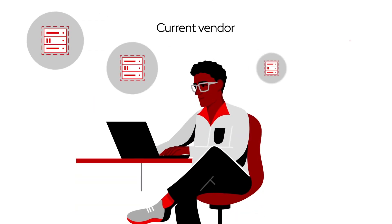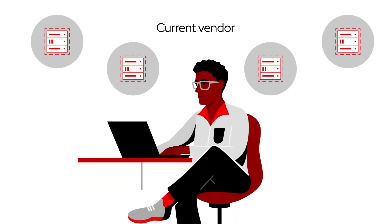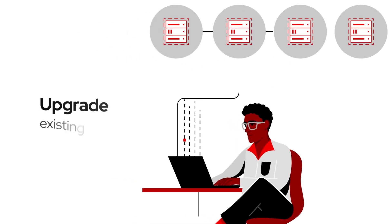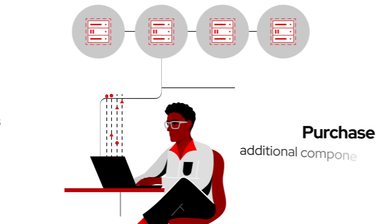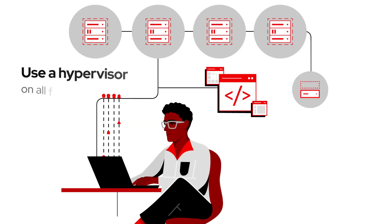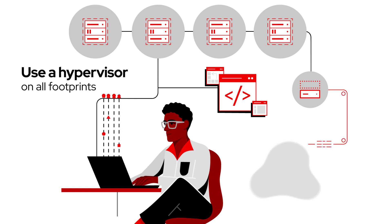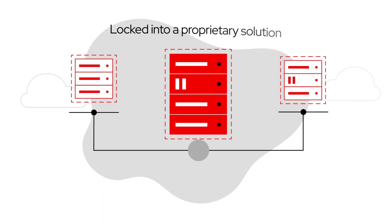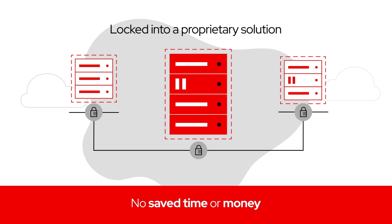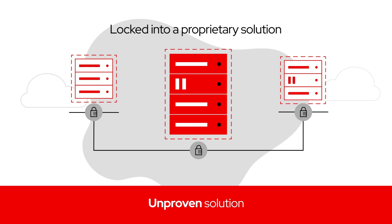The vendor I'm currently working with says their latest solution is right for us, but we'd have to upgrade our existing systems, purchase additional components, as well as drag along a hypervisor wherever we decide to go – on-premises, hybrid, or public cloud. It would also require being locked into a proprietary solution that adds complexity, so it's not going to save us time or money. Not to mention that it's relatively new, meaning it's unproven for running production apps in enterprises such as ours.